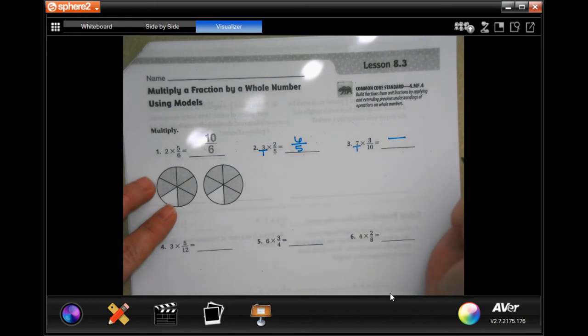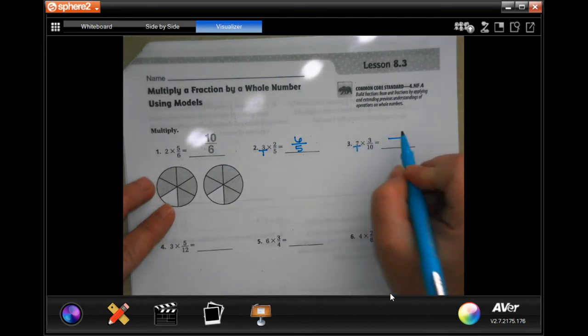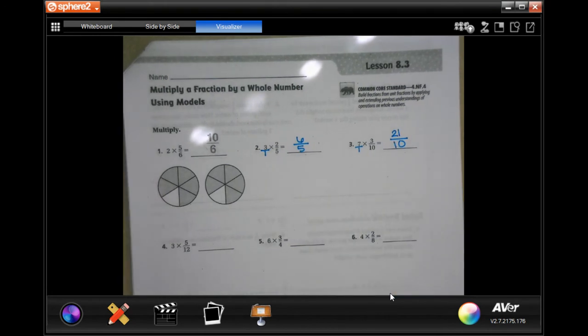Again, put a one under it. Seven over one is the same thing as seven. Just seven times three, twenty-one. One times ten, ten. Done.